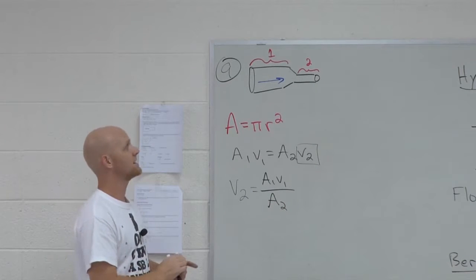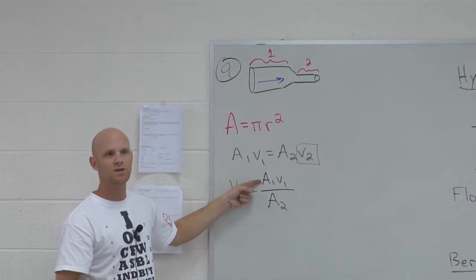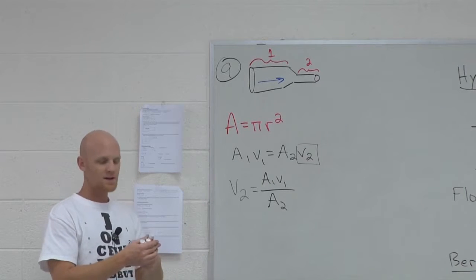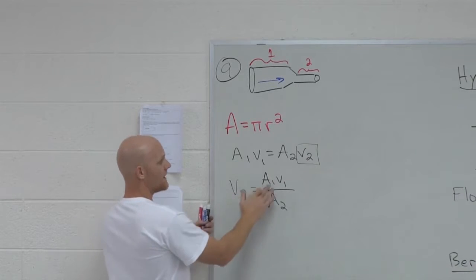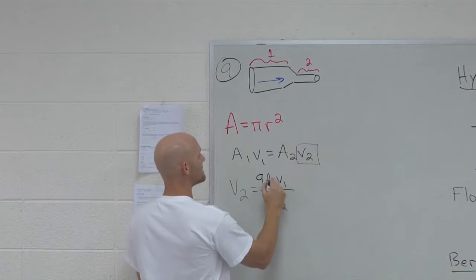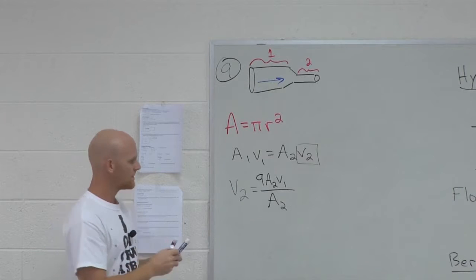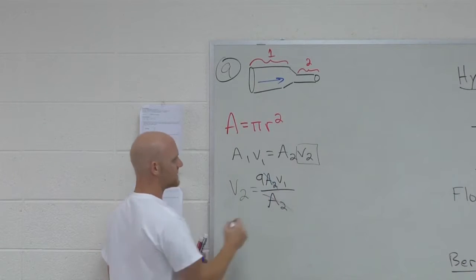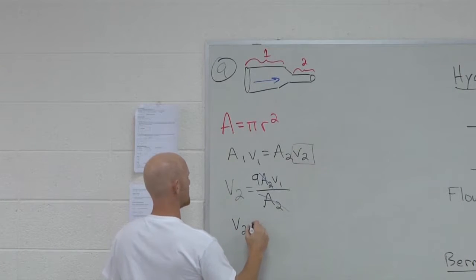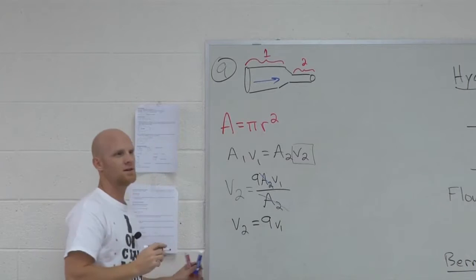But, again, if the radius is three times bigger in region one, then the area in region one is how many times bigger than the area in region two? Nine times bigger. So instead of A1 here, I'm going to replace that. A1 is equal to nine times the area of region two. And so my areas in region two cancel, and I found out that, indeed, like we just said, the velocity in region two is nine times the velocity in region one.